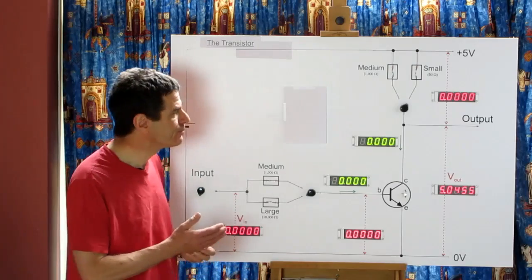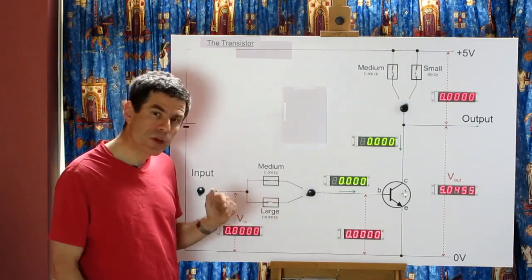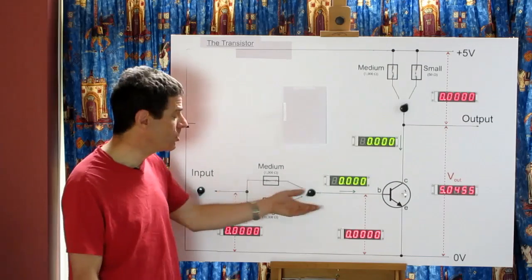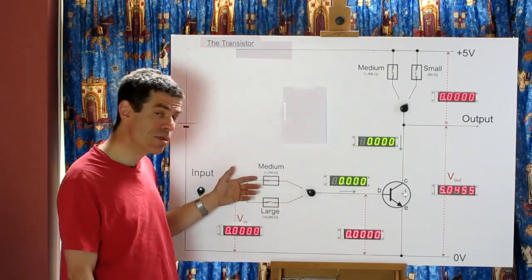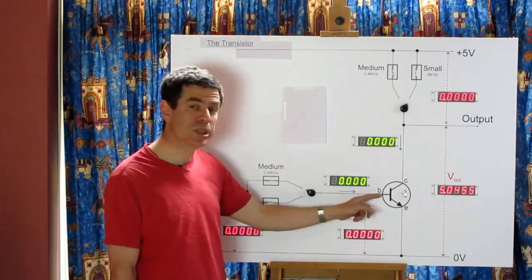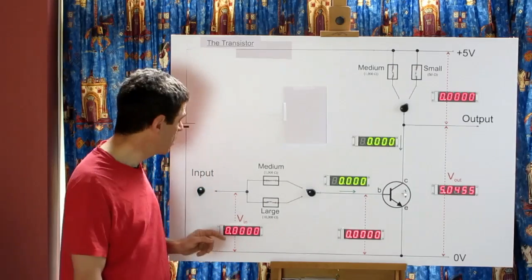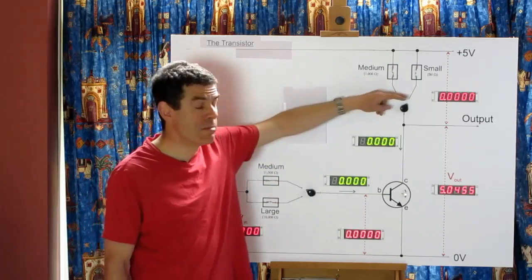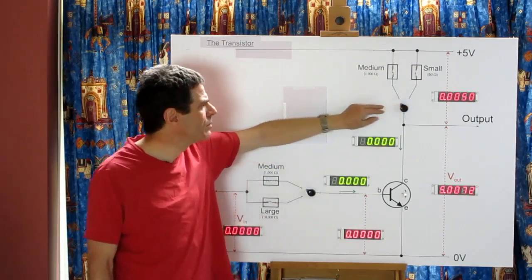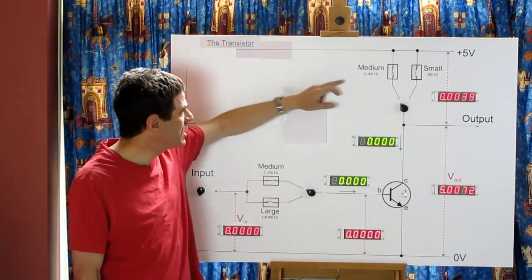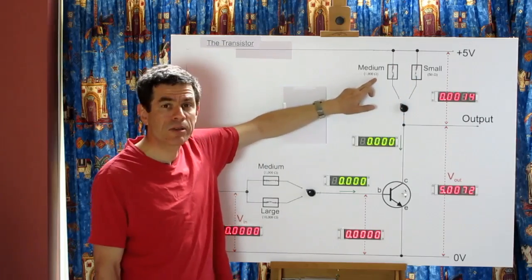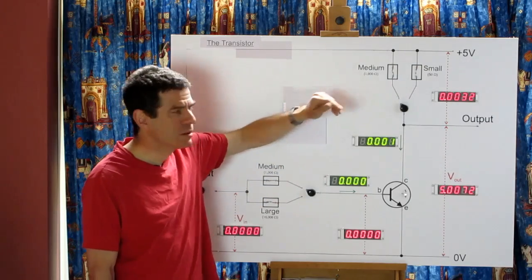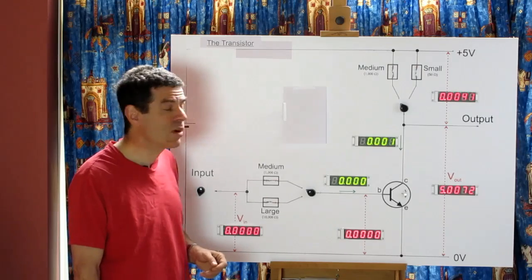First, we're going to decrease the base resistor from 10,000 ohms to 1,000 ohms — a tenth of the resistance — so we expect 10 times as much current to flow into the base for a given input voltage. We're also going to make it much harder for the power supply to provide current by changing the collector resistor from 50 ohms to 1,000 ohms. With a 5 volt supply and 1,000 ohms, the maximum current the power supply can provide is 5 milliamps.